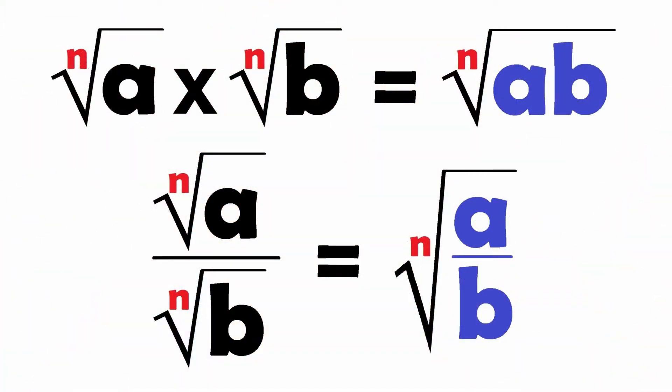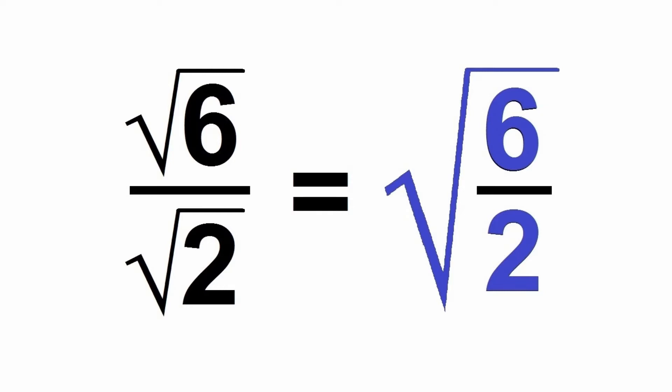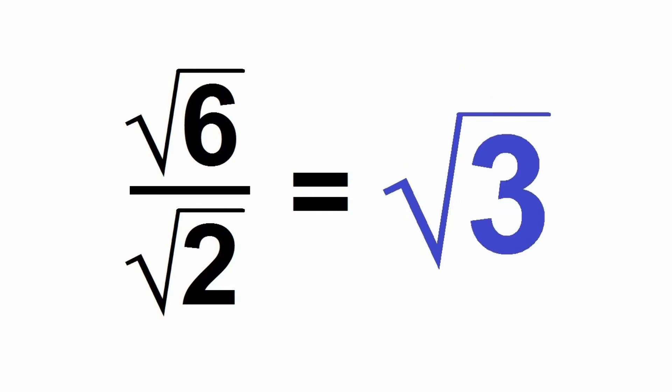Now if you were paying close attention in my last video, some of you might have noticed an even better shortcut. Remember how radicals can be combined if they're being multiplied or divided? That means that the square root of 6 over the square root of 2 is actually the same as saying the square root of 6 over 2, which is 3. Well, that was easy.